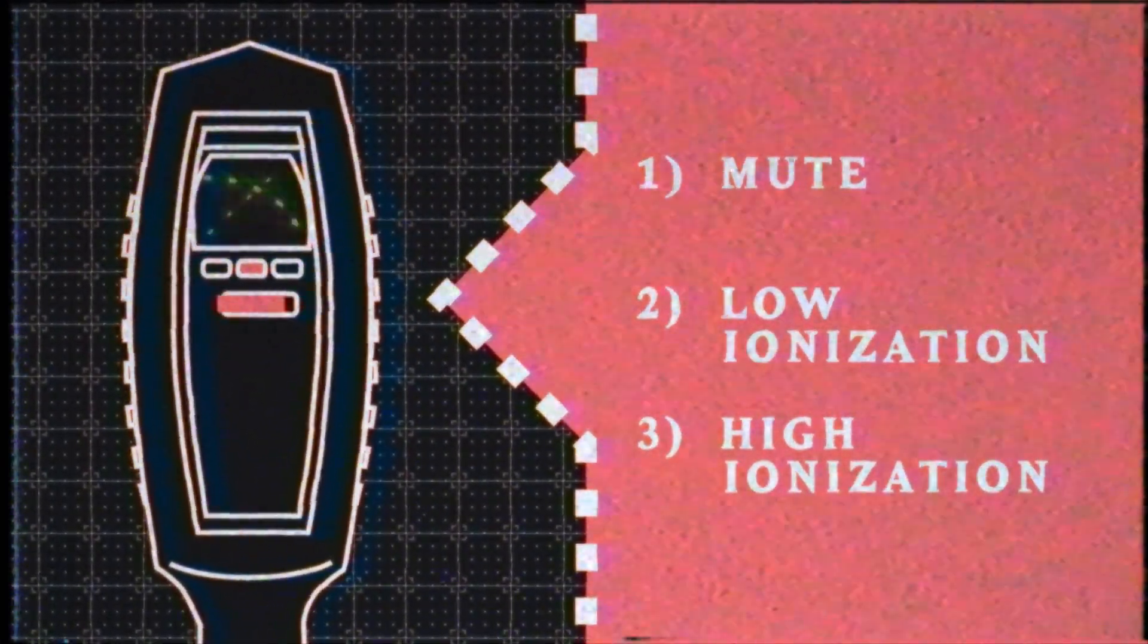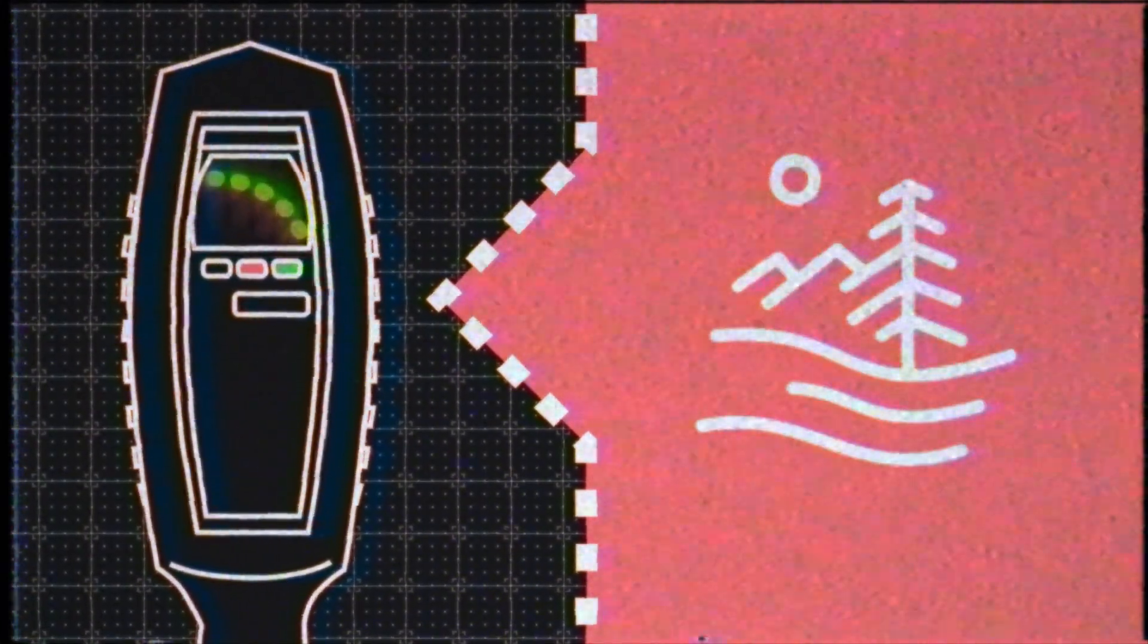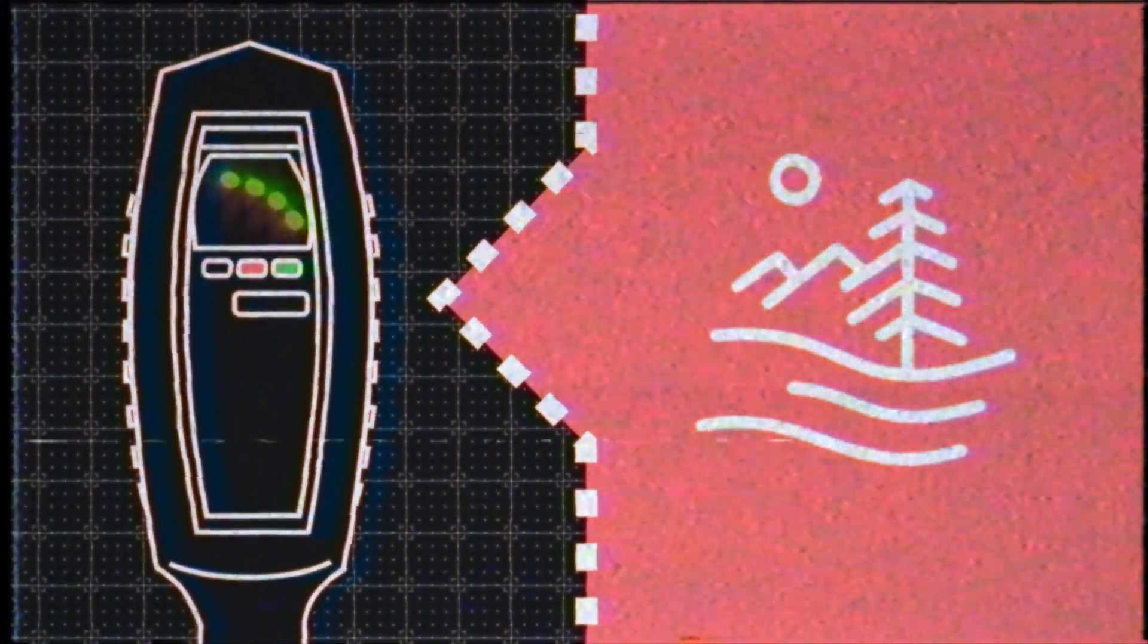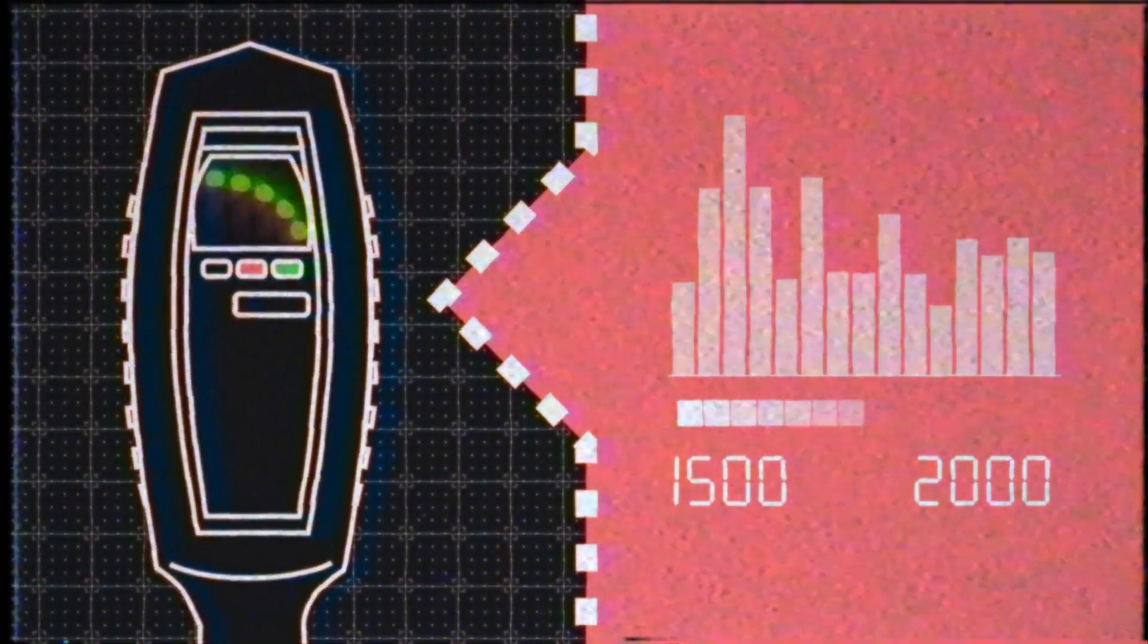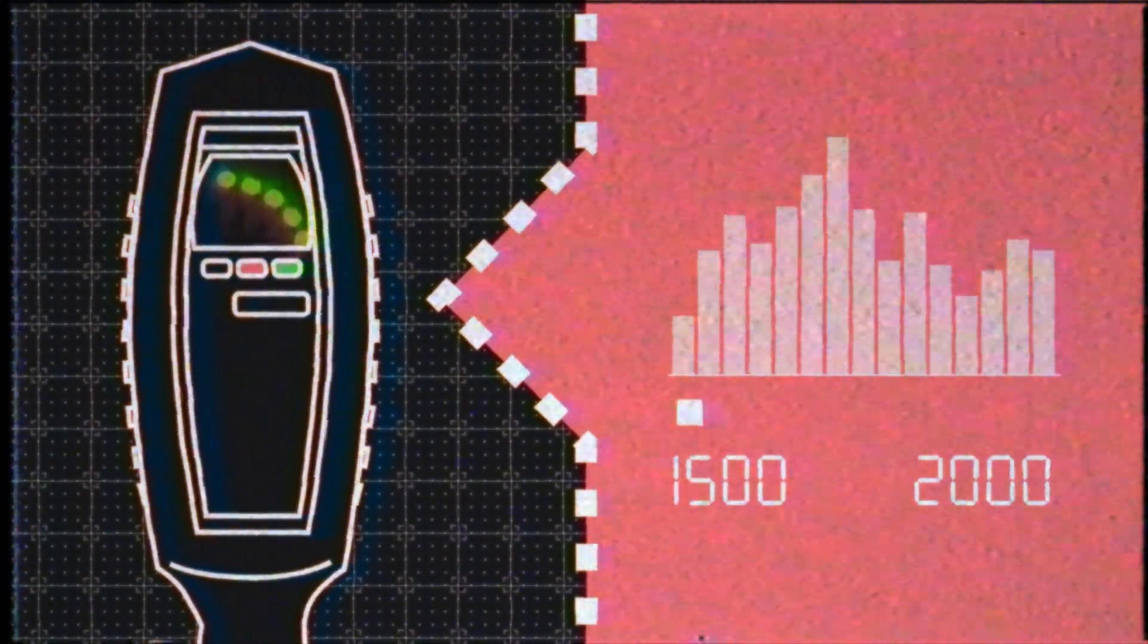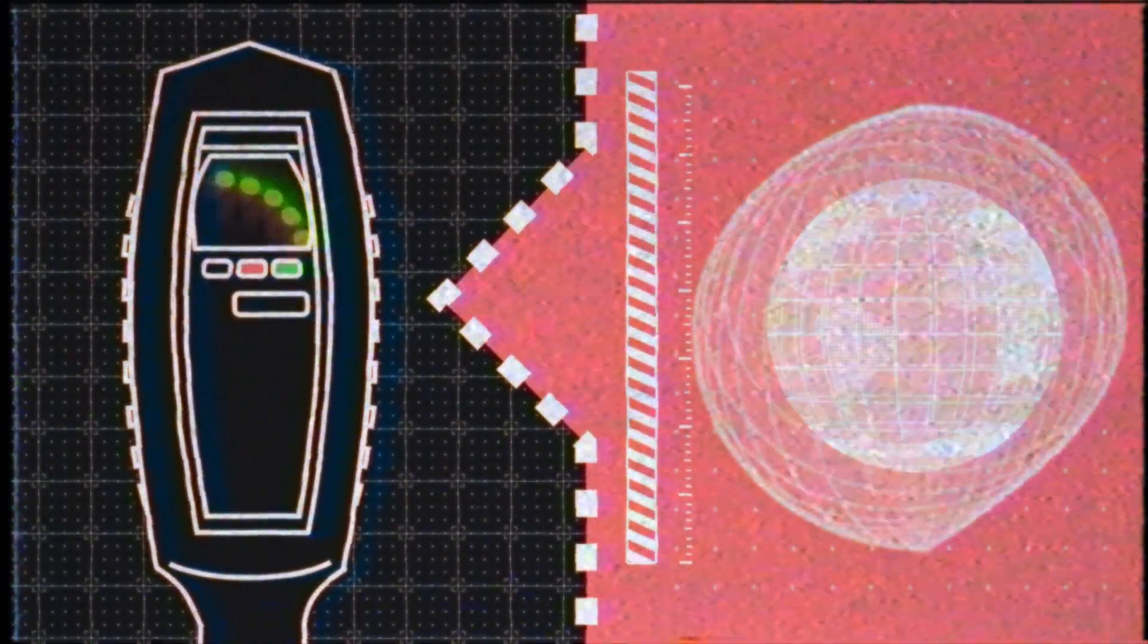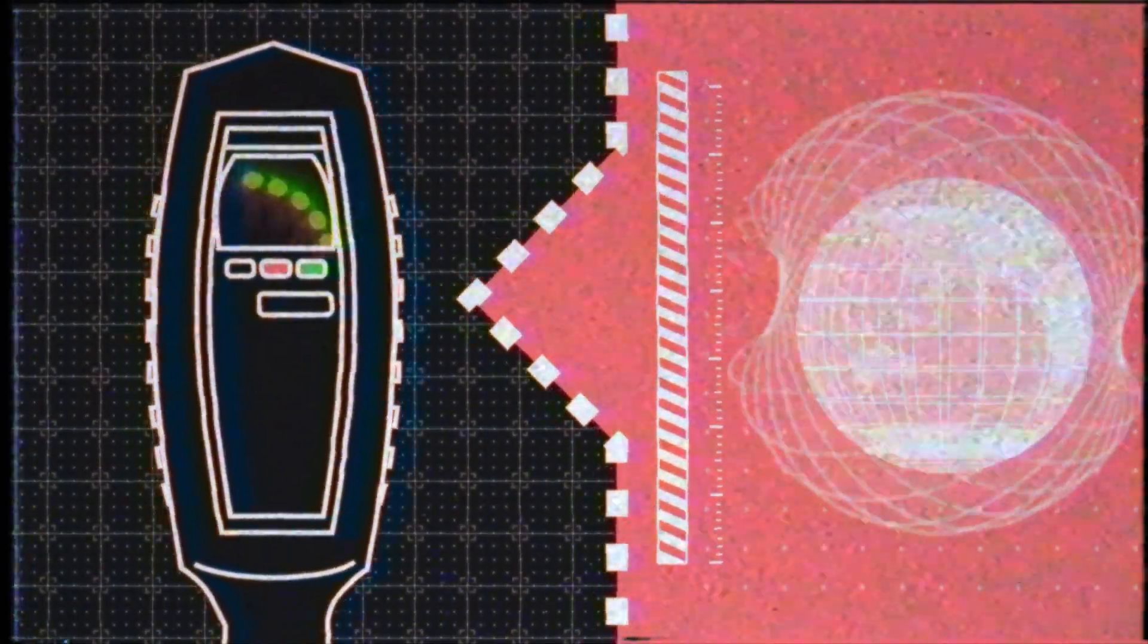High ionization: this setting is activated when the slide switch is on the right, as indicated by the green light. This setting is more effective in outdoor locations where ion concentrations often range from 1500 to 2000 ions per cubic centimeter. High ionization allows the PKE meter to account for environmental ions and thus give a more accurate reading.